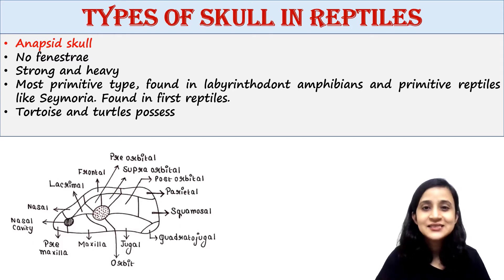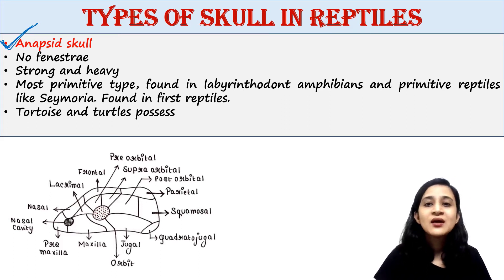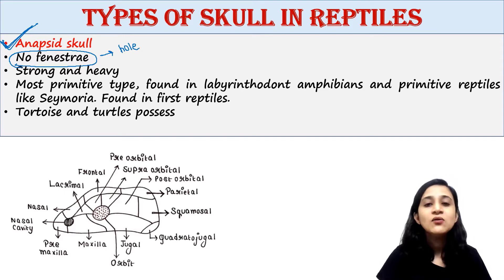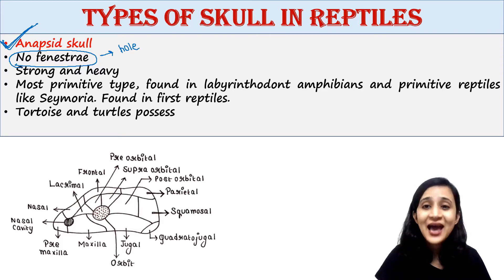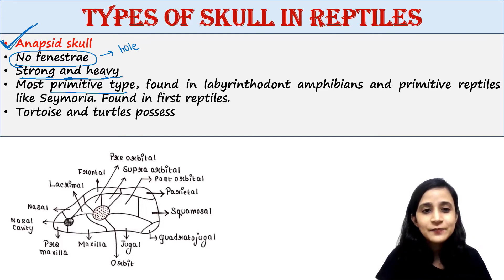Now let's talk about types of skull in reptiles. There are five types. First is the anapsid skull. This type of skull does not possess any fenestrae — no holes or openings. This skull is completely covered by bones. Anapsid skull is very heavy and strong, and it is the most primitive type of skull.